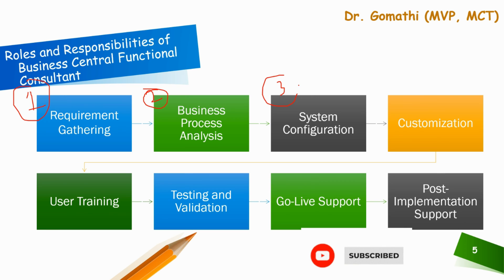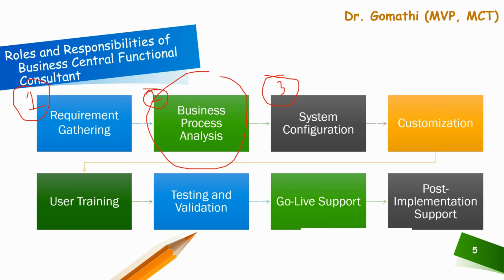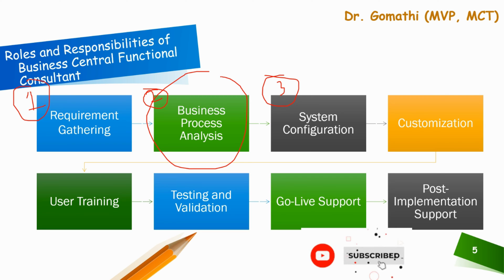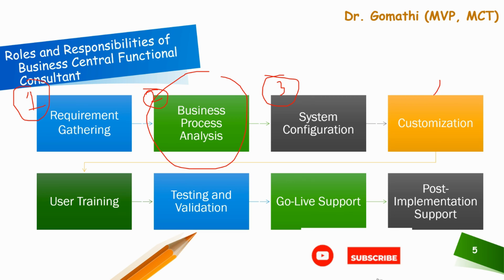The third phase is system configuration. Using your analysis from the previous phase, you configure Business Central's inventory module. You set up item categories for different product types, define item attributes, and establish default inventory costing methods. You also configure locations for each store and the central warehouse, ensuring seamless stock transfers and tracking.